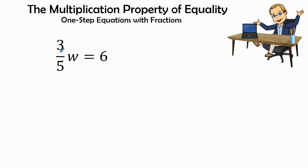So when we have 3 over 5, that means that we are going to multiply it by its reciprocal of 5 over 3.